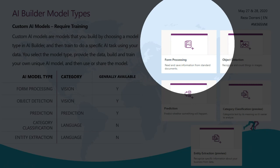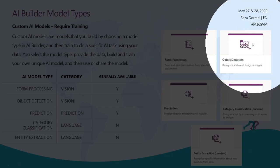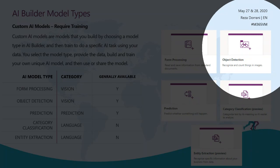Form processing is related to the vision category of artificial intelligence. It is generally available and it enables you to read and save information from standard documents that look alike — we will look at this in a full demo. The second model is object detection, which is once again related to the vision category. It is generally available, and what this allows you to do is train the model to detect objects — these could be logos, physical objects, or brands. You can help the model understand these objects and then leverage them in your apps and flows, where it will provide the response based on your training as well as the count of how many times it has observed those items in the images provided.